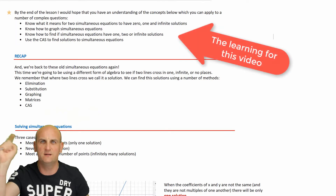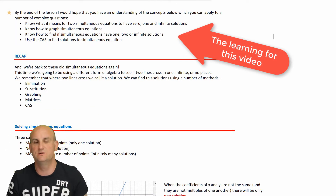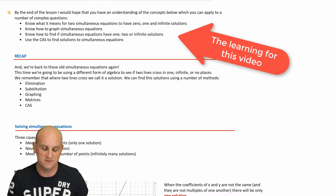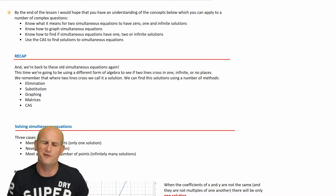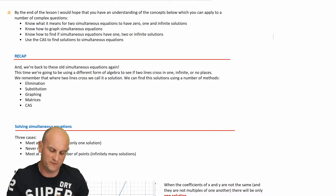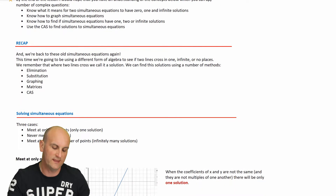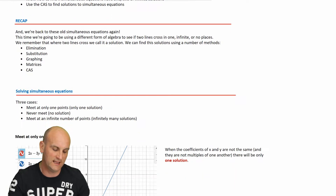As is now highlighted above, the learning objective of the lesson is to know what it means for two simultaneous equations — we're only dealing with two equations at this moment in time — to have 0, 1, and infinite solutions. To infinity and beyond, as my mate Buzz Lightyear says. So that's to know how to graph simultaneous equations, know how to find whether they have 1, 2, or infinite solutions, and know how to use the CAS.